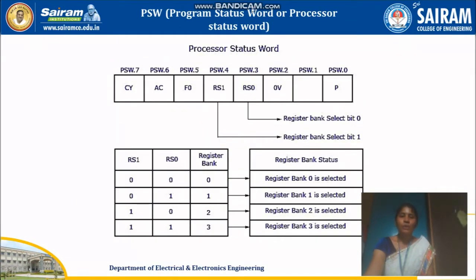Next is your program status word, or processor status word. The PSW is of 8-bit, with bits numbered 0 through 7. Suppose if I wanted to access the 5th bit of PSW, I have to write 'SETB PSW.5'. PSW.0 stands for parity, PSW.1 is not in use, PSW.2 is overflow, PSW.3 is RS0, and PSW.4 is RS1. These two bits RS0 and RS1 are important for register bank selection.